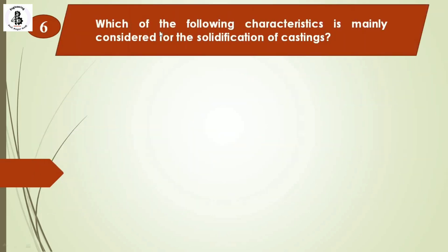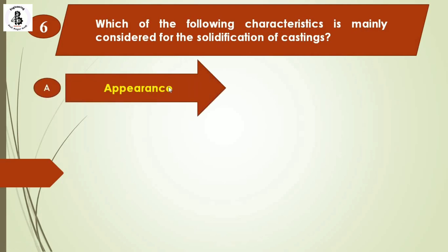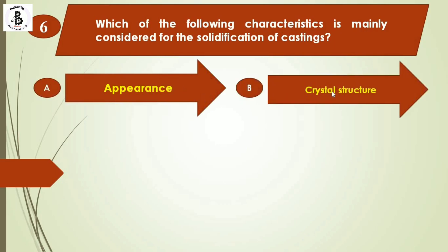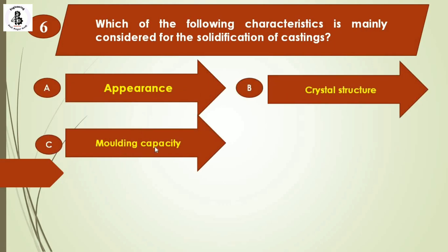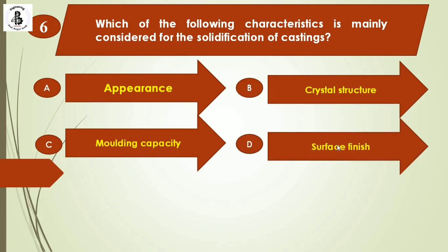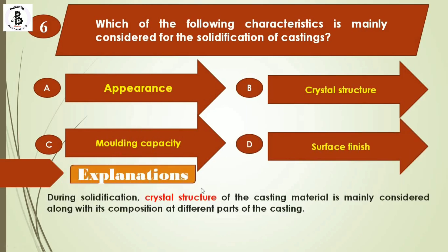Next question: Which of the following characteristics is mainly considered for solidification of castings? Option A: appearance. Option B: crystal structure. Option C: molding capacity. Option D: surface finish. During solidification, the crystal structure of the casting material is mainly considered along with its composition at different parts of the casting. The right answer is option B.